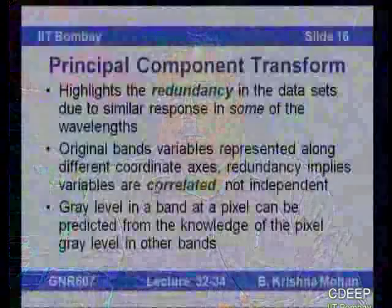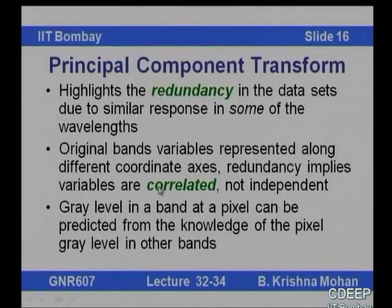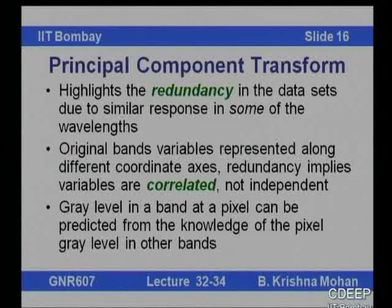First, we will look at the dimensionality aspect of it. Whenever you have remote sensing data captured in different visible bands and different infrared bands, band to band there will be a considerable amount of similarity. In other words, if you know the pixel value in one band, you will know to a reasonable extent what the value would be in an adjoining band. There is inter-band correlation. If in one band the values increase, in the other band the values might also increase.